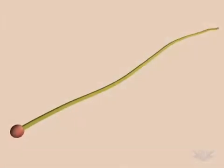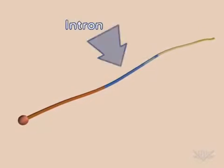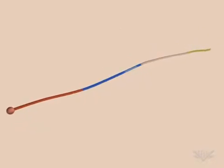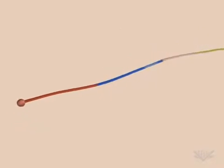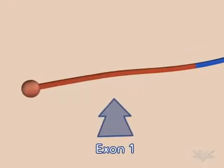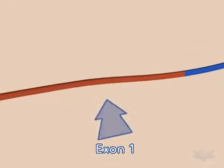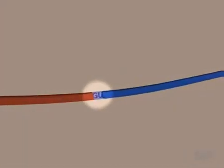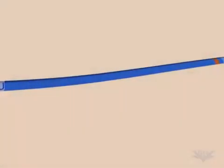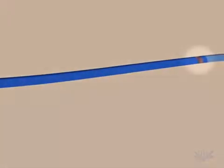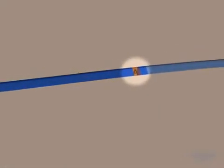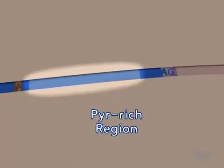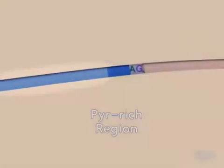Here we see an RNA molecule with a single intron. Several signals exist within the intron that are used in the splicing process. From the 5' end of the intron, these are GU, the A branch site, a pyrimidine-rich region, and the 3' AG.